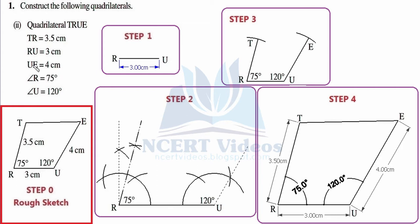Now we check the measurement for UE — 4 centimeter. Using the point previously constructed at 120 degrees, we elongate with the ruler and put the measurement as 4 centimeter, then place vertex E. It is now just a matter of connecting vertex T with E, and with that our rough sketch step number zero is completed.